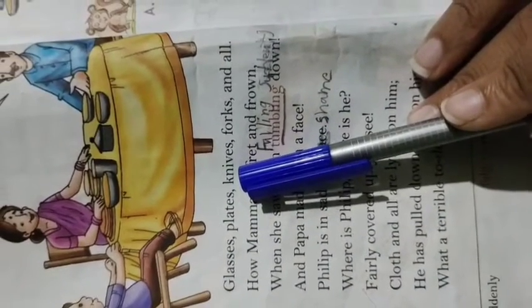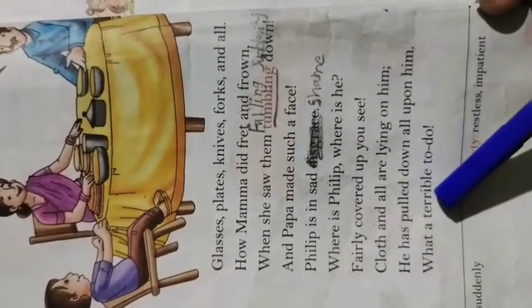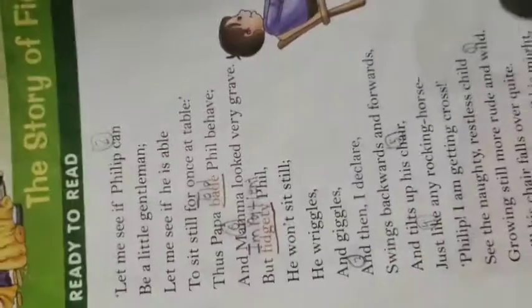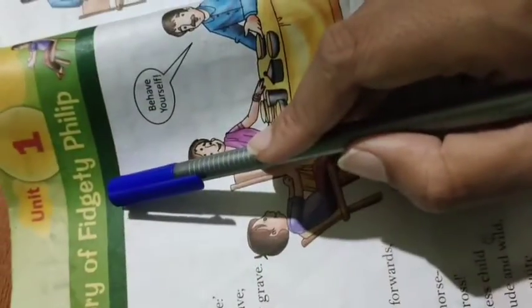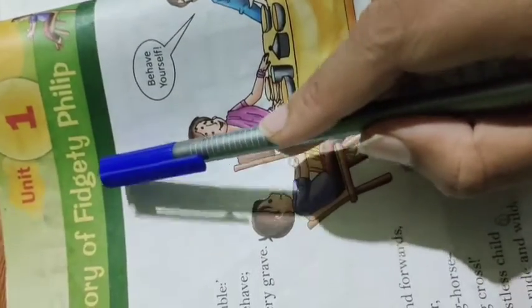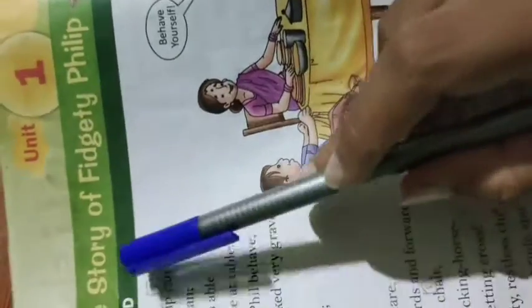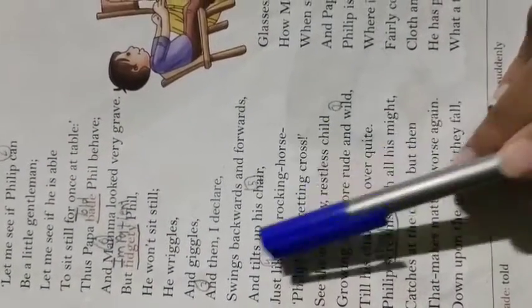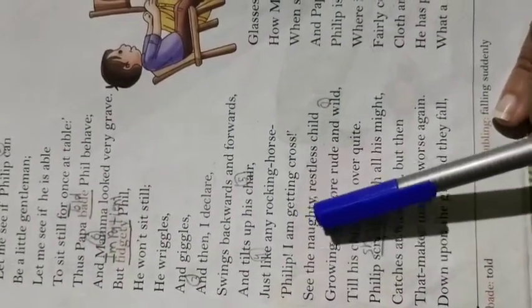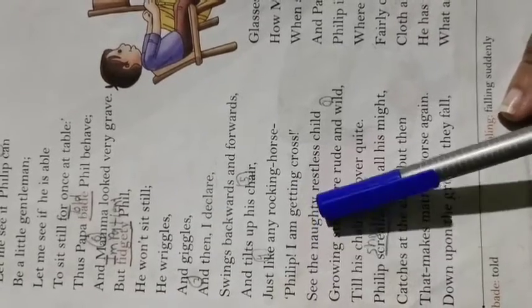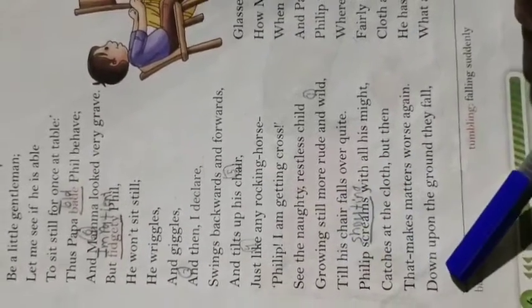How Mama did fret — this is 'stumbling.' And yes, this is 'terrible.' The story is of Fidgety Philip — not 'fidgety,' it is read as 'fidgety.' The story of Fidgety Philip. Coming to Philip's rocking horse — 'giggles,' 'wriggles,' 'restless,' and 'naughty' — GH is silent here, it is read as 'naughty.'